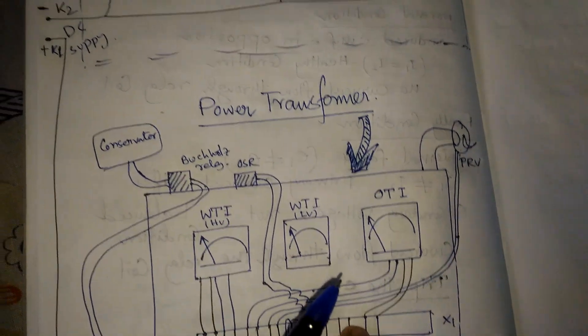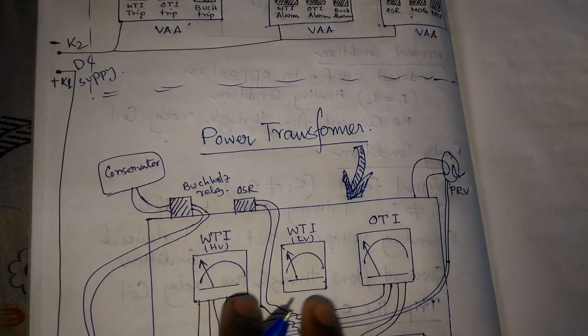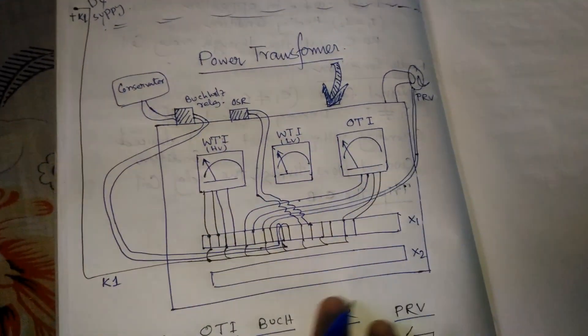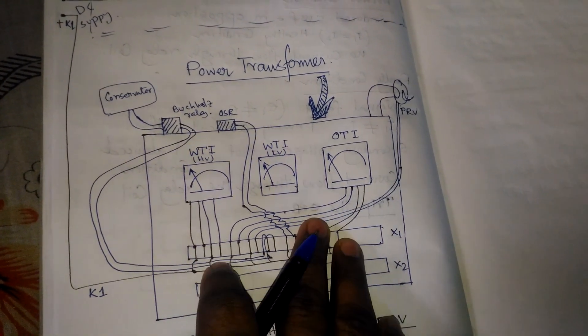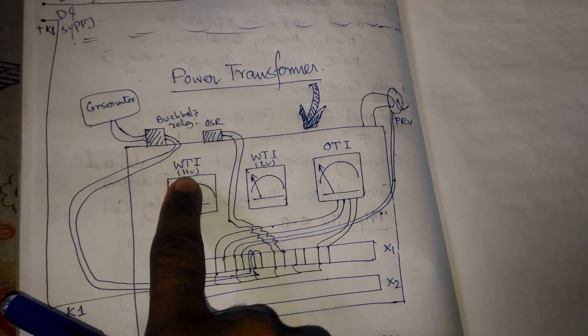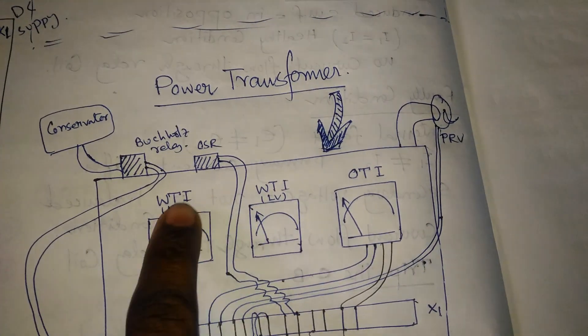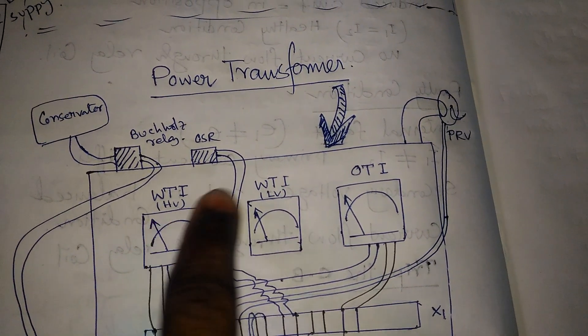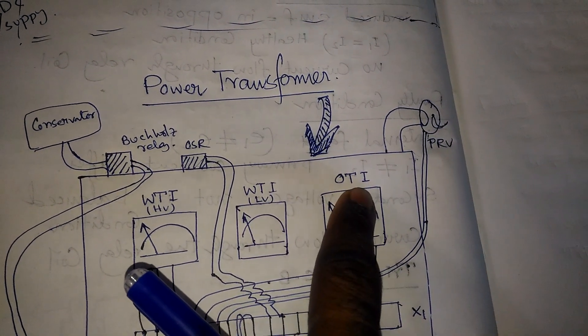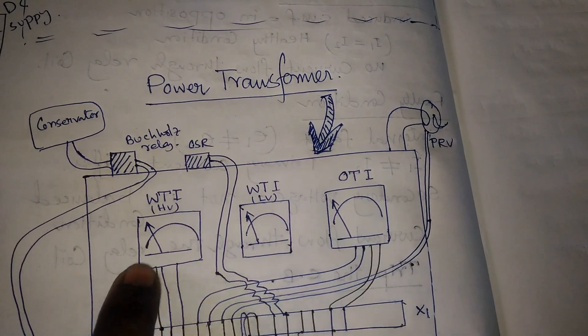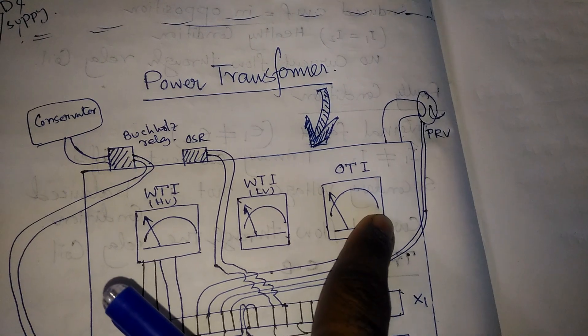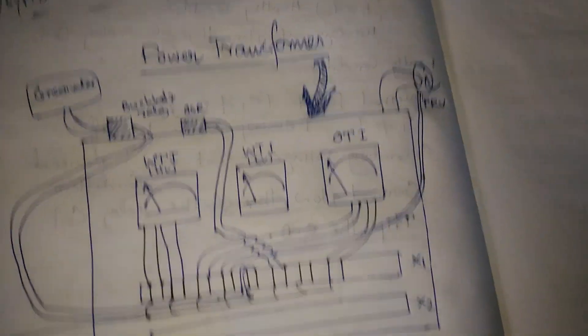This is a pictorial representation of our transformer. This is the Marshalling box, WTI winding temperature indicator for HV high voltage side, winding temperature indicator for low voltage side, and OTI oil temperature indicator. These three temperature indicators are attached with the Marshalling box.